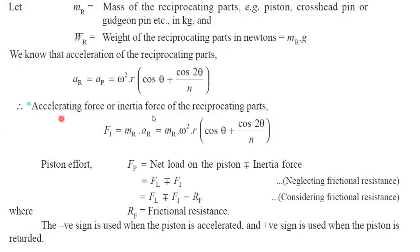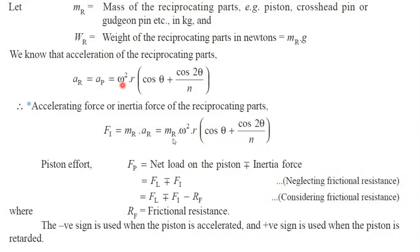Accelerating force and inertia force are both the same. So inertia force of the reciprocating part — denoted as Fi — is equal to the mass of the reciprocating part multiplied by the acceleration of the reciprocating part. So Fi = MR × AR, which is MR multiplied by the acceleration of the piston.